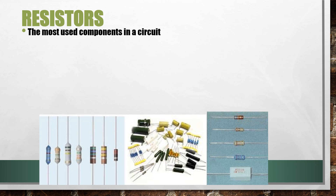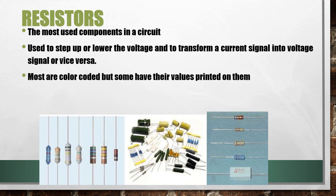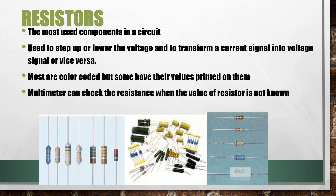Resistors are used to step up or lower the voltage at different points in a circuit, and they can be used either to transform a current signal into a voltage signal or to transform a voltage signal into a current signal. Most resistors are color coded, but some have their values and tolerance printed on them — these values are in Ohms. A multimeter is a device that can check the resistance when the value of a resistor is unknown. Resistors are typically marked with an R on a circuit board.